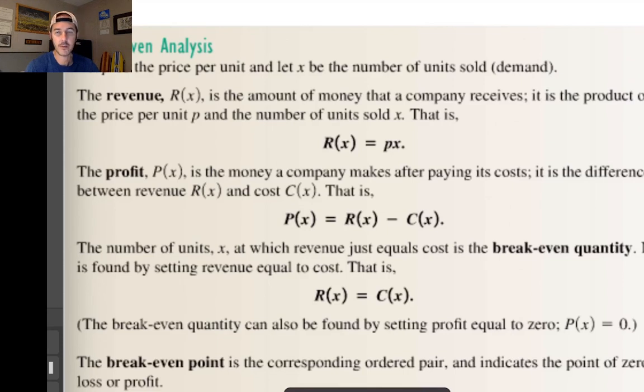And costs include things like if you have a physical space, like for a restaurant, you have to pay for your rent, electricity, running the air conditioning, you've got employees. There's a whole slew of overhead, especially when it comes to running a restaurant. So you do have to subtract those costs out.